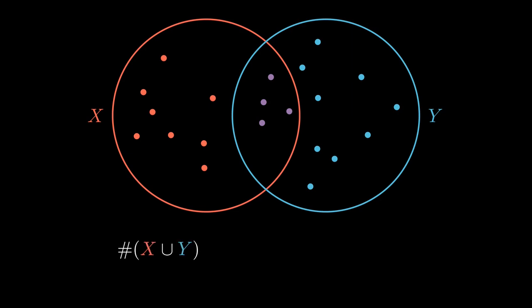What I want to do is count the number of elements in X union Y. To count the things that are in either X or Y, that's going to equal the number of things in X plus the number of things in Y. But I will have overcounted, because I'm counting the stuff that's in both X and Y twice. So I've got to subtract off the number of things in both X and Y — the purple points — so that I count each dot exactly once.